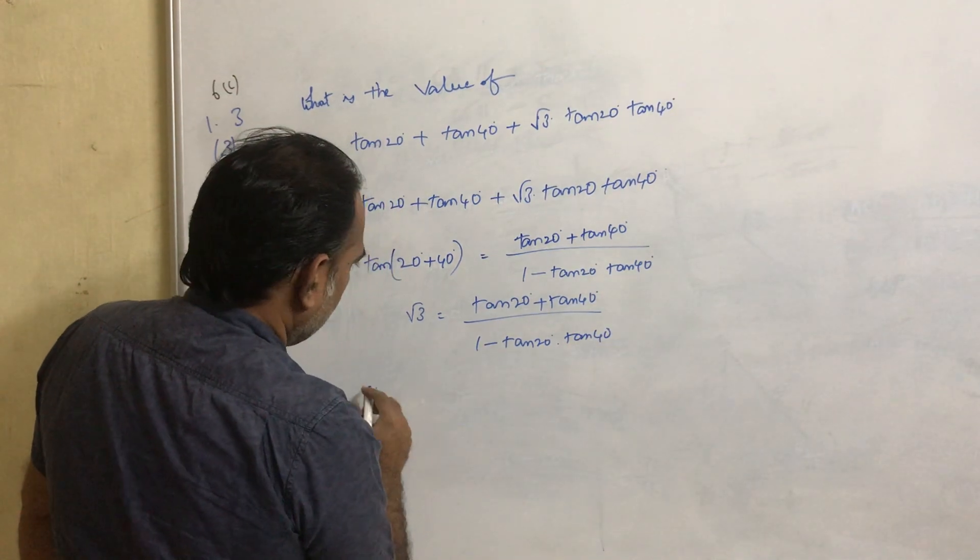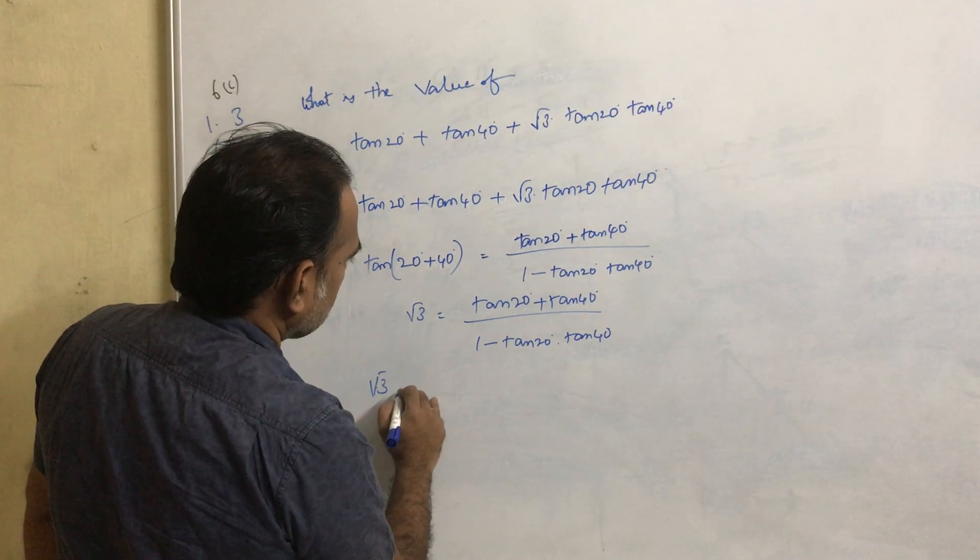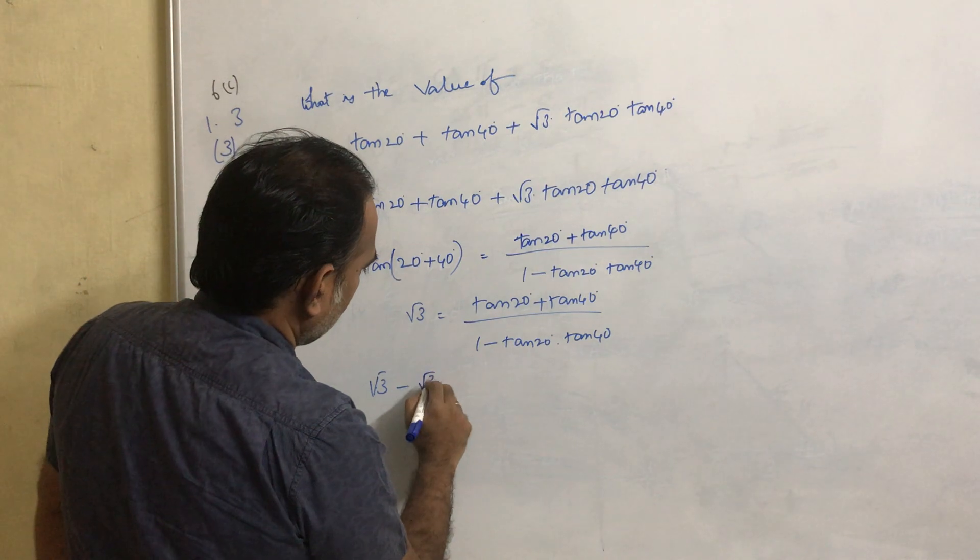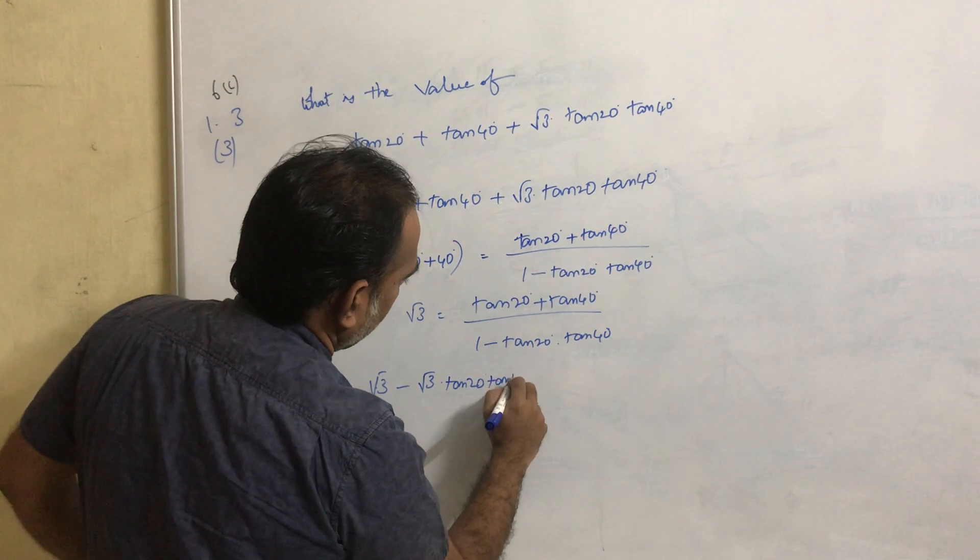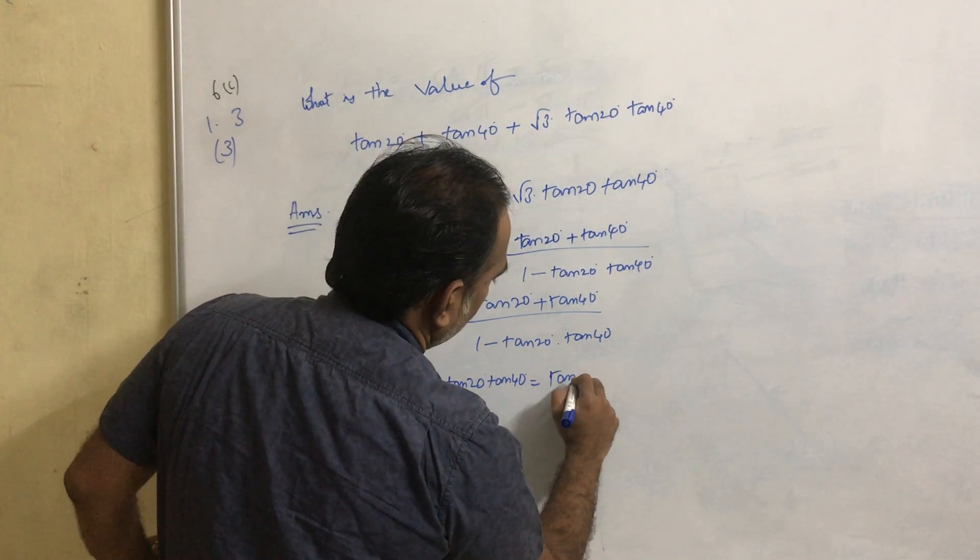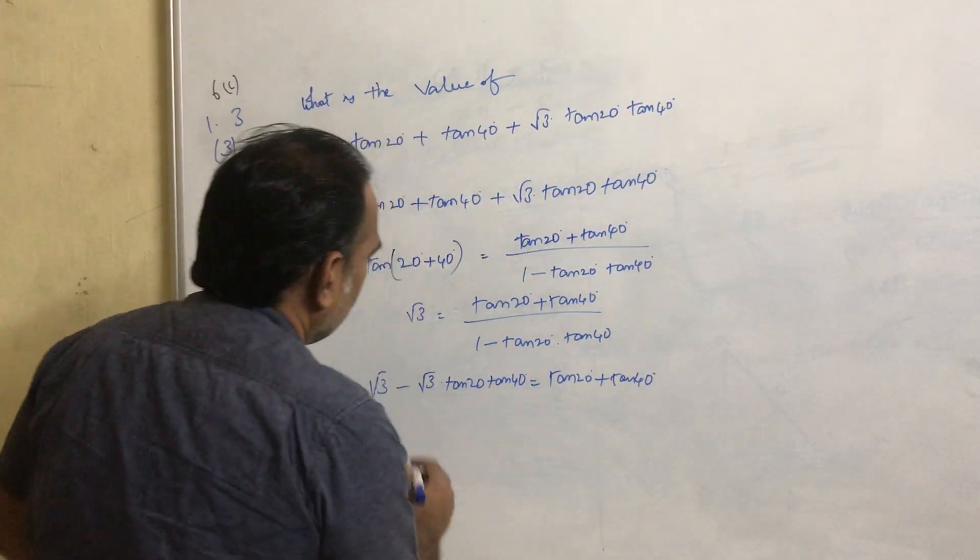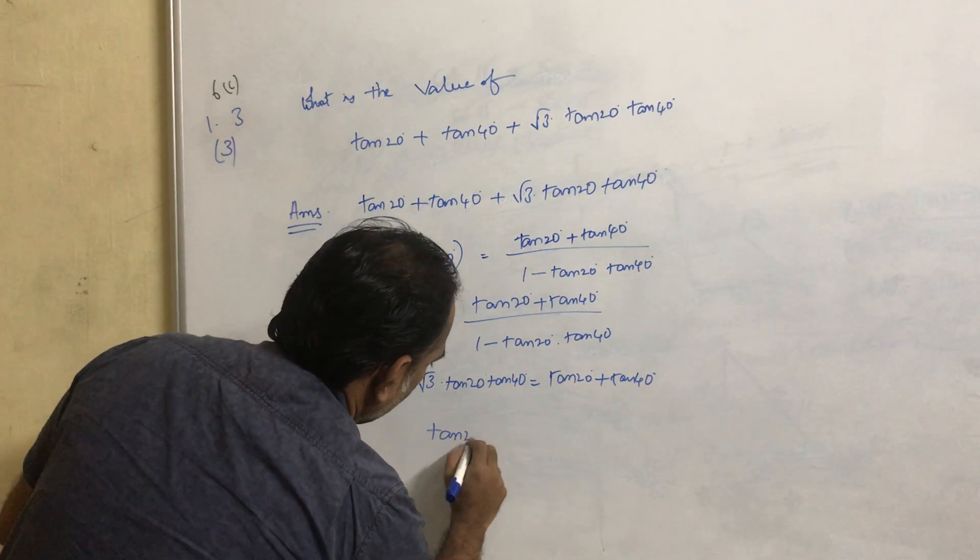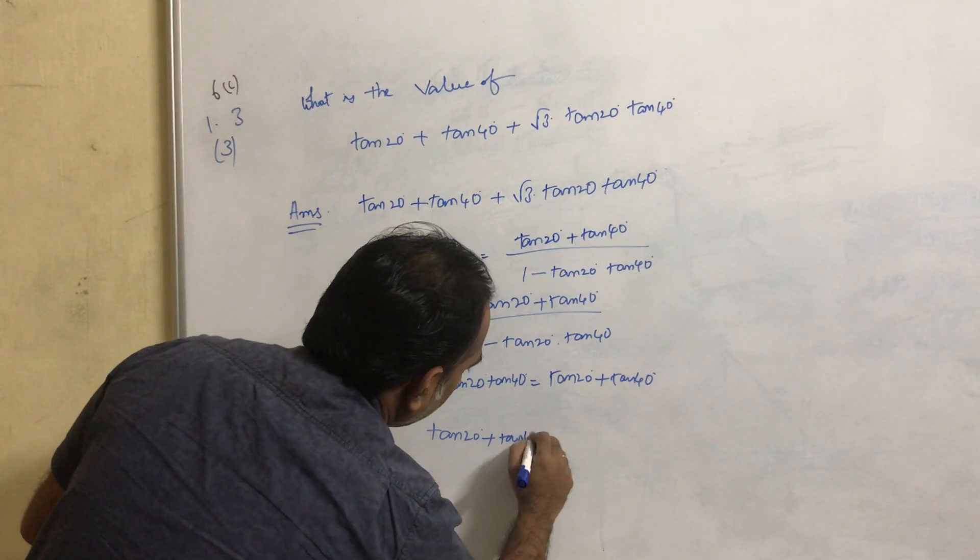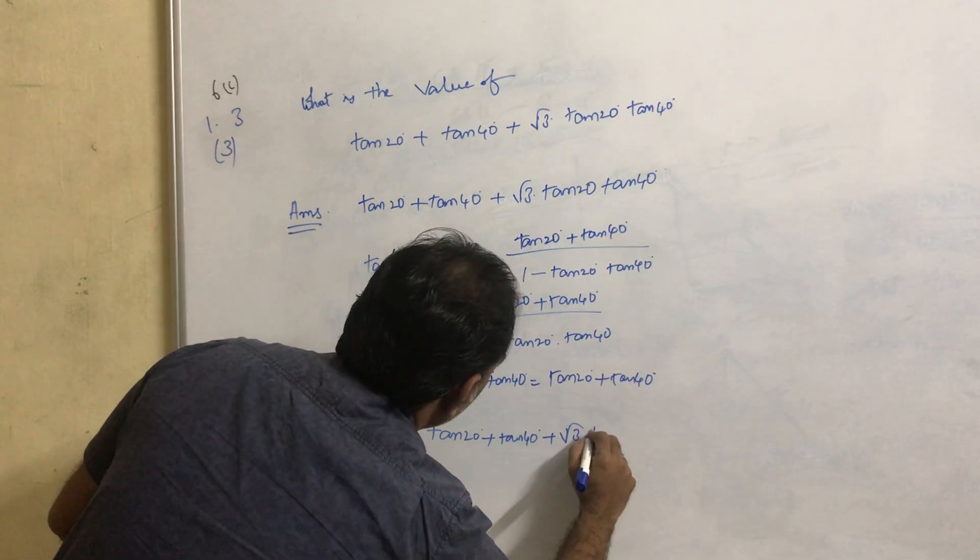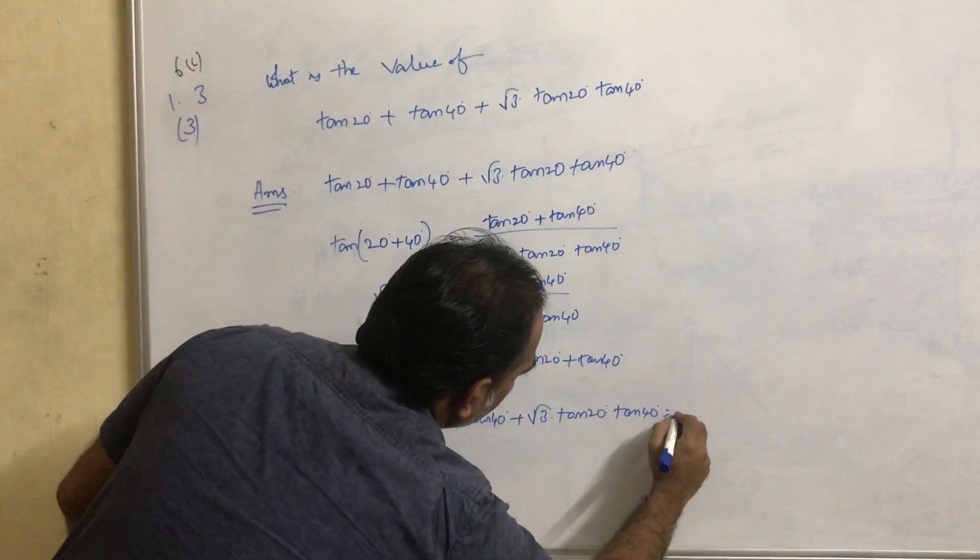This again can be written as root 3 minus root 3 into tan 20° tan 40° equals tan 20° plus tan 40°. So tan 20° plus tan 40° plus root 3 into tan 20° tan 40° equals root 3. Simple.